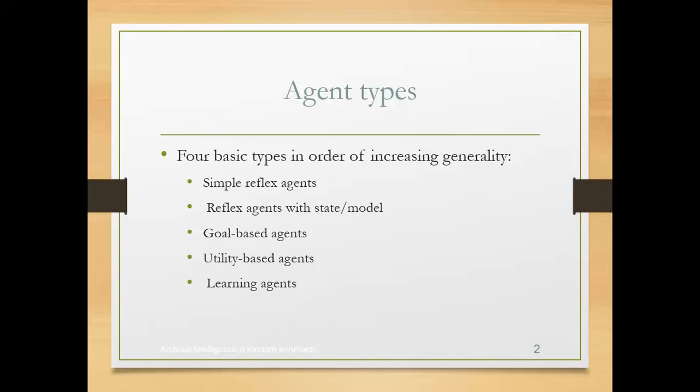We have four basic types in order of increasing generality, but in general we are going to classify them as five different types of intelligent agents. By combining the advantages of all these four basic agents, we are going to introduce a new agent called the learning agent.